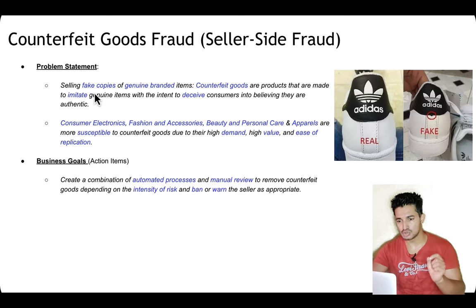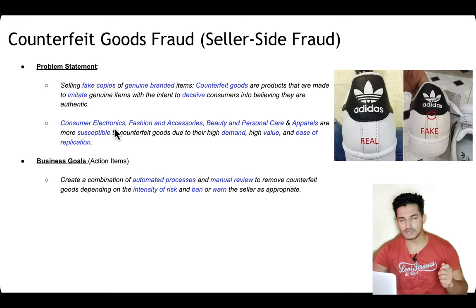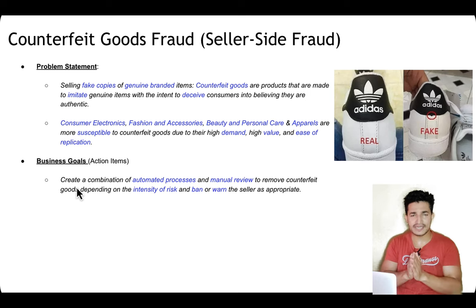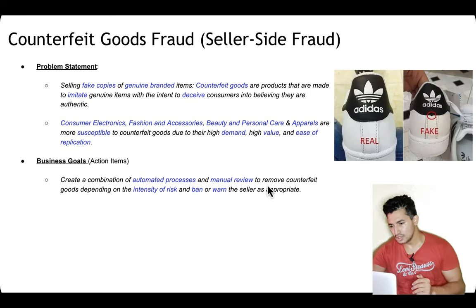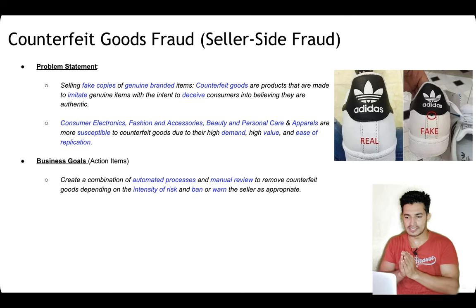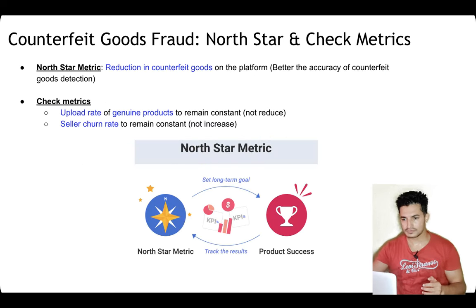The problem statement: sellers try to sell fake copies of genuine branded items. Counterfeit goods are products made to imitate genuine items with intent to deceive customers into believing they are authentic — for example, a fake Adidas product. Consumer electronics, fashion and accessories, beauty and personal care, and apparel are most susceptible to counterfeit goods due to high demand, high value, and ease of replication. How does business want to solve this? Business wants to create a combination of automated and manual review to remove counterfeit goods depending on the intensity of risk, and ban or warn sellers as appropriate.